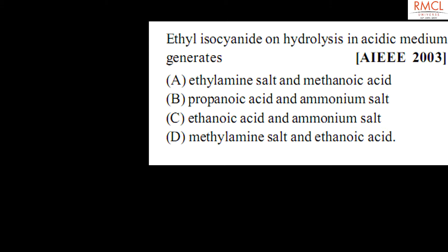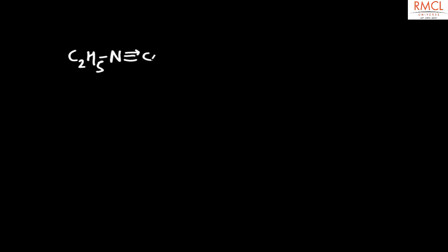The given question is from IEEE 2003. The question is: ethyl isocyanide on hydrolysis in acidic medium. The formula for ethyl isocyanide is C2H5-N triple bond C, where one bond is a coordinate bond.